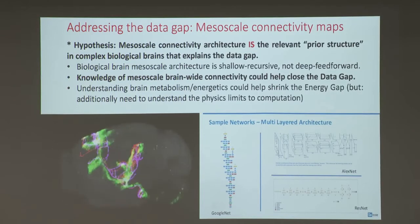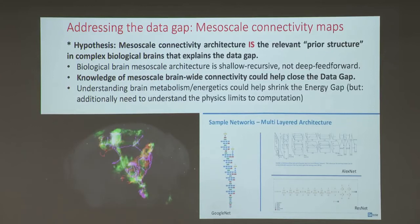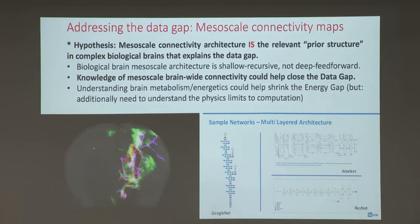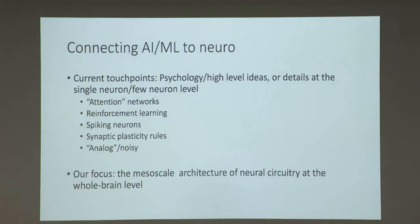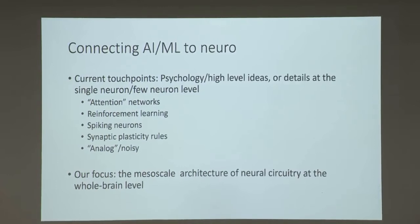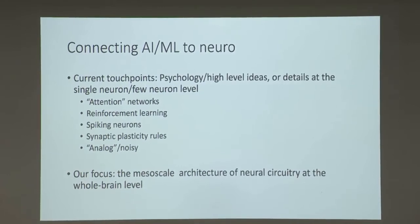This is not a new thought, but it's quite specific as to what aspect of architecture we need to understand. The current touchpoints between AI, ML, and neuroscience are at the level of psychology or high-level ideas. People take psychological concepts like attention — attention modules — or reinforcement learning, which is a high-level behavioral idea. Or people take things at the level of individual neurons — the fact that neurons spike, synaptic plasticity rules, that the brain is analog and noisy.